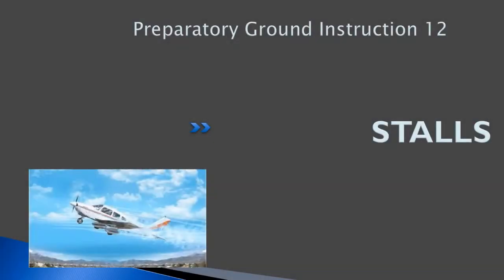Hello everyone. Welcome back to freepilotgroundschool.ca. This is exercise 12, the preparatory ground instruction for exercise 12. We're going to be discussing stalls on the aircraft. In this lesson, you're going to be learning how to enter and recover from, and especially prevent, an inadvertent stall. This is an important lesson because stalling an aircraft when unexpected has led to a lot of crashes — it's a good way of unfortunately killing yourself, or best case scenario, making a bad landing. So it is important that you recognize when an aircraft is about to stall.